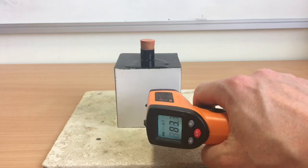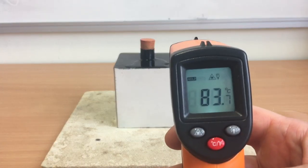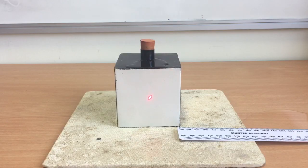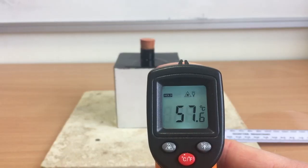So if I move really close to the Leslie Cube, you can see we get a reading of 83.7 degrees Celsius, whereas if I go way back behind the camera and repeat that reading, we get a reading of 57.6 degrees Celsius.